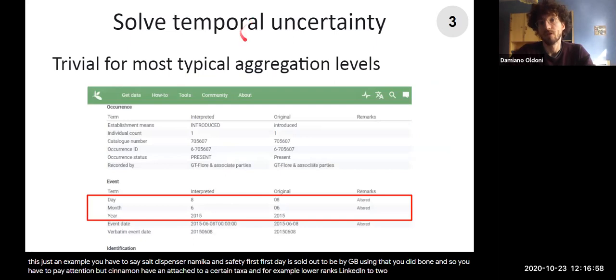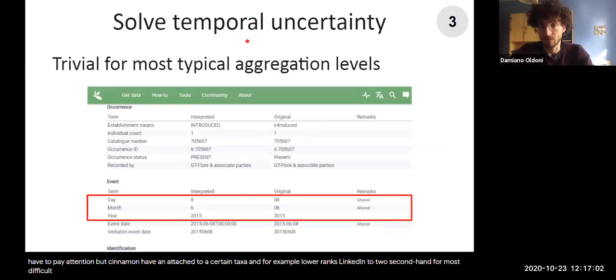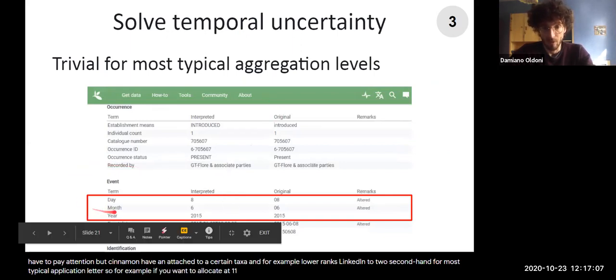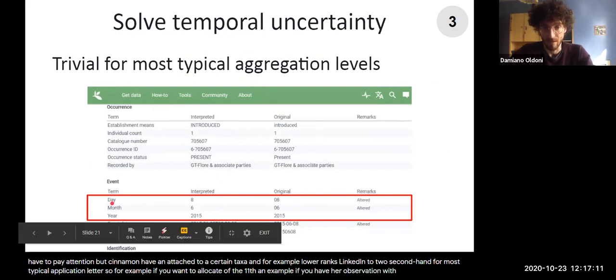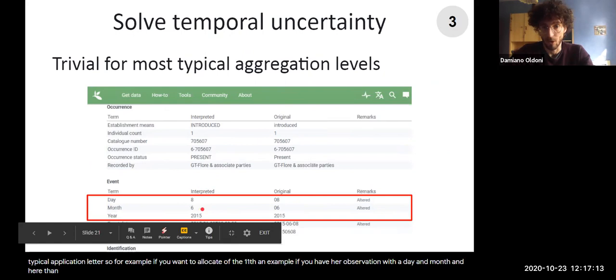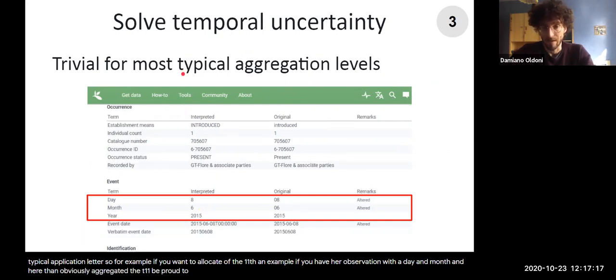Second uncertainty is temporal, but it's quite trivial for most typical aggregation levels. So for example, if you want to aggregate at year level, then for example if you have an observation with a day and month and year, then they're obviously aggregated at year level without any uncertainty.